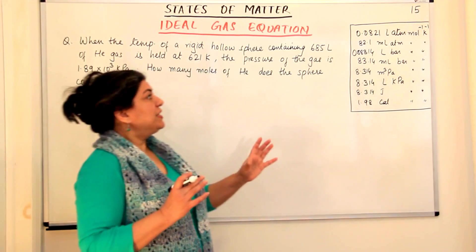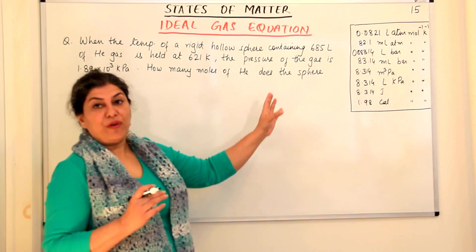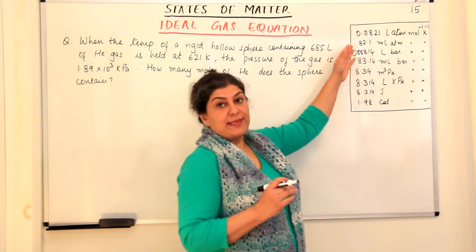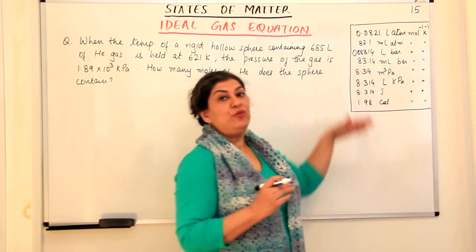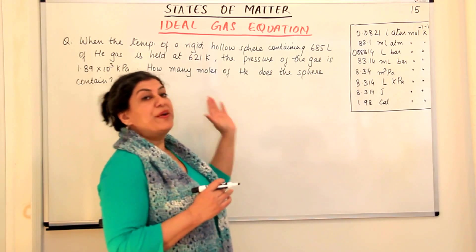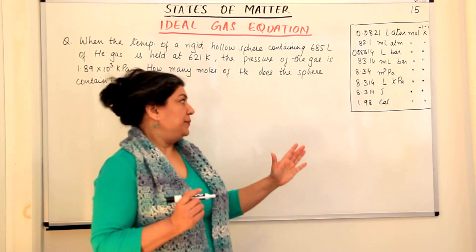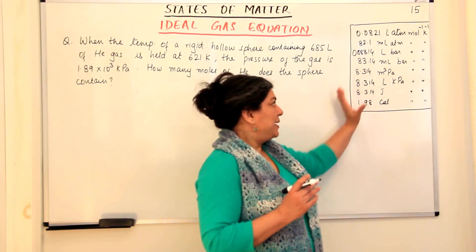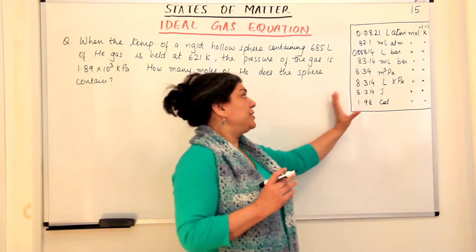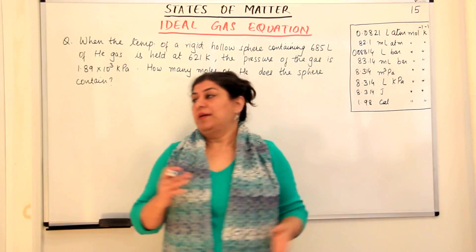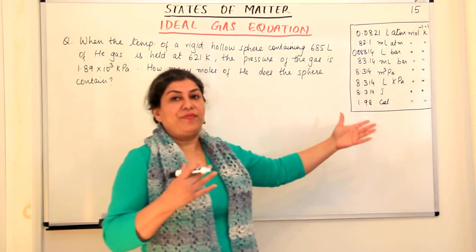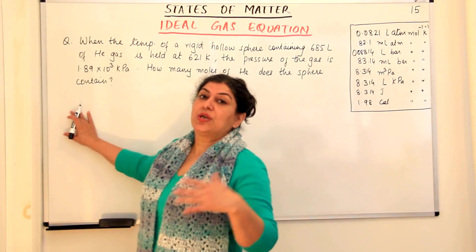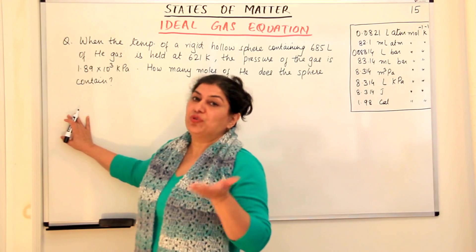I have written out the various values of R, that is the gas constant, here. As I told you in the previous video, these values depend on the unit of pressure and volume that are taken. It would be useful if you could memorize this table — which value of R you would be using depends on which units.